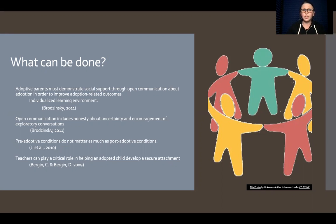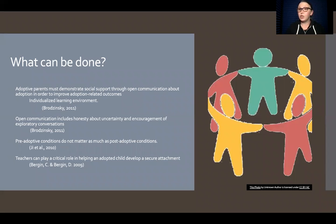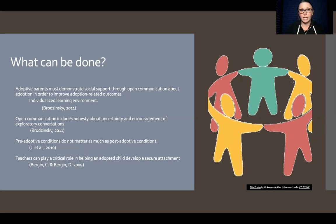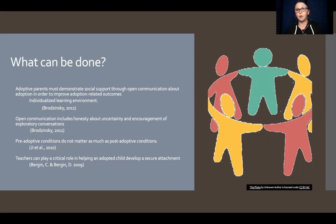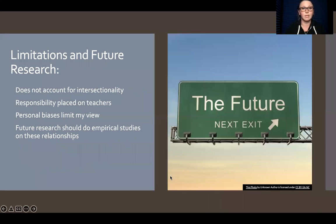Teachers can play a critical role in helping the adopted child adjust, form secure attachments, and improve learning outcomes. Bergen and Bergen in 2009 found that the teacher is a critical attachment figure for the child, especially an adoptee. Considering how different role models in the child's life also impact them, we can think holistically about what can be done to improve learning outcomes and thus improve mental health outcomes for the adoptee.